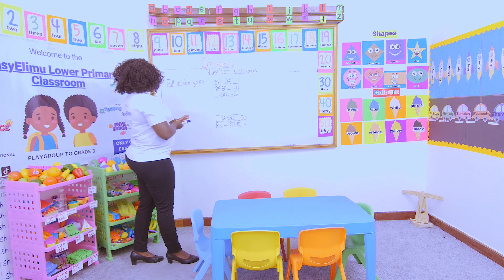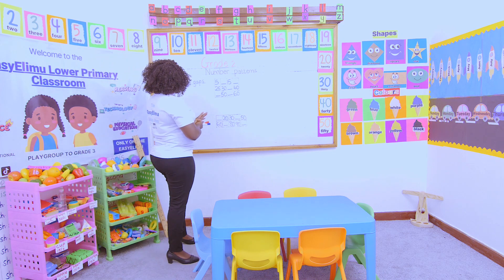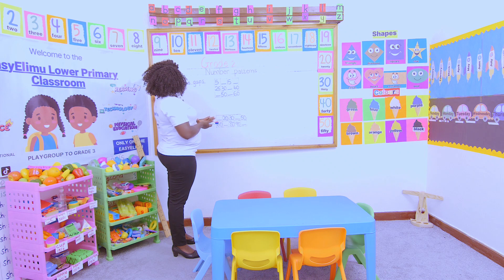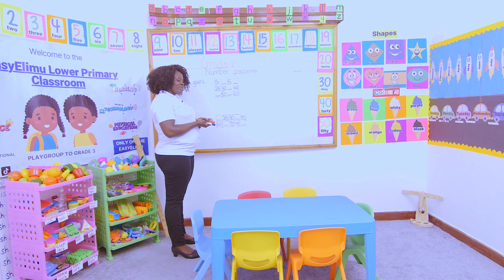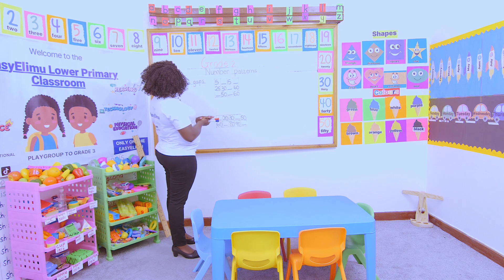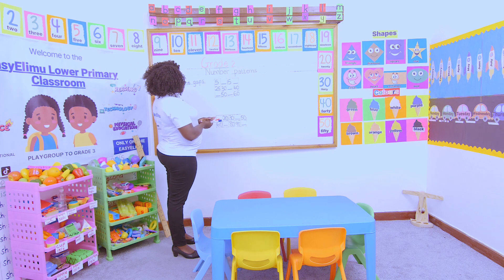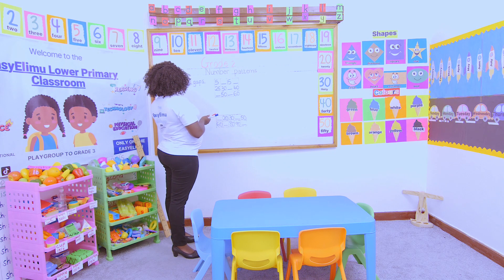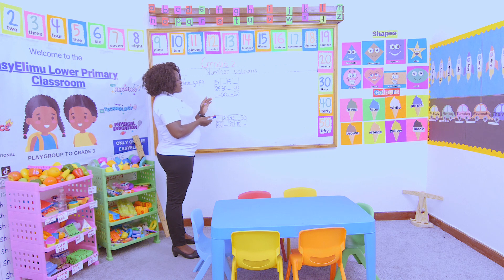We did number patterns. Have you seen number patterns? We have done them. We have done the counting in ones, the counting in twos, the counting in fours, in fives, in tens, forward, backward. And we have done them on a number line. Right now we are doing them on boxes.